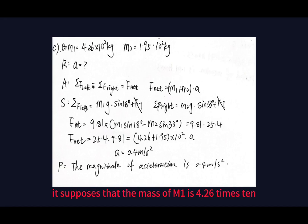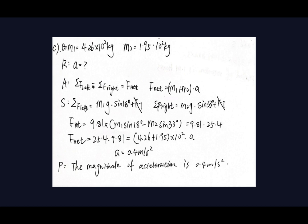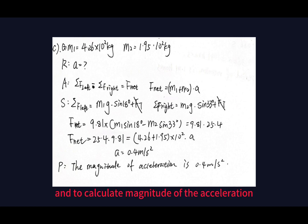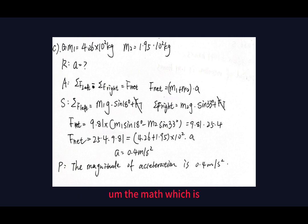For question C, the mass of m1 is 4.26 times 10 squared kilograms and the mass of m2 is 1.95 times 10 squared kilograms, and the crate moves to the left. The angles and other conditions remain the same — the incline is frictionless. The whole system is moving to the left, so the net force also points left.